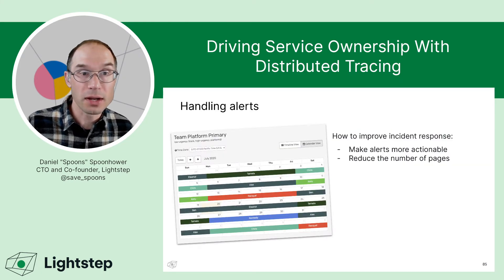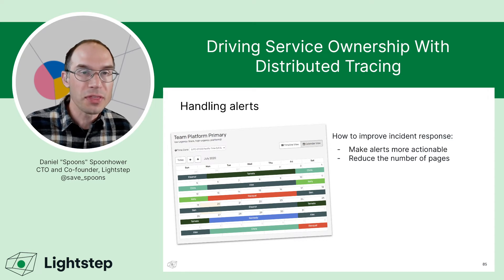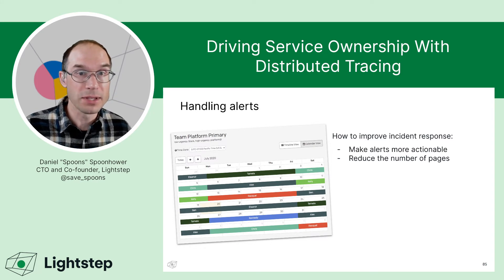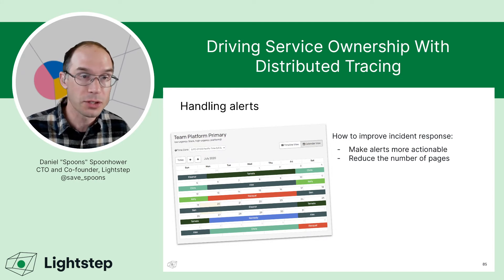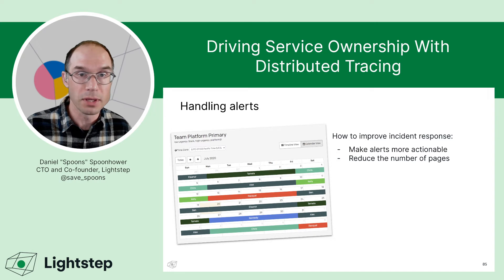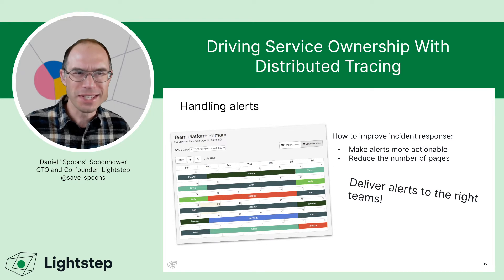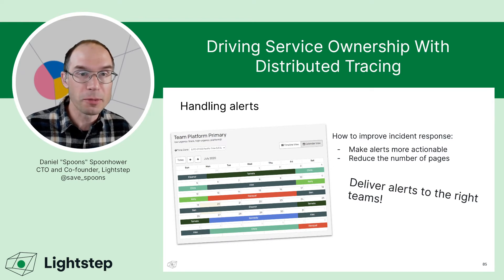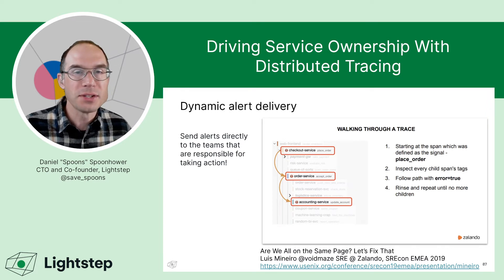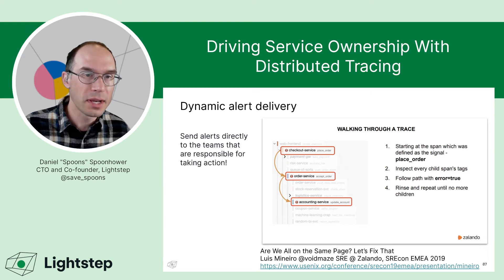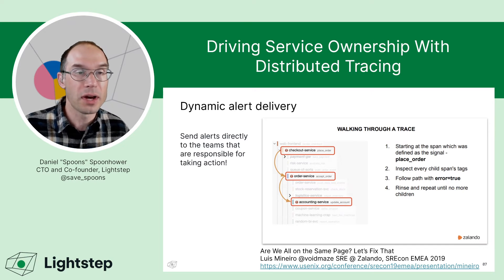Thinking about how to make on-call the best experience it can be means making alerts more actionable, reducing the number of alerts, reducing alert fatigue, and — even better — making sure we're delivering alerts to the right teams. I want to give an example from the community: some folks at Zalando, including Luis Monero, actually used distributed tracing to deliver alerts to the team that they thought could best act on them.